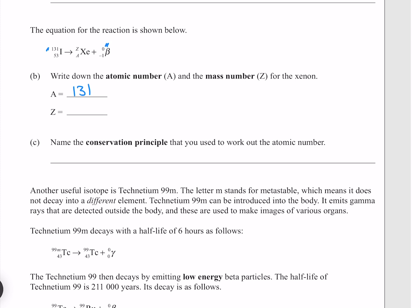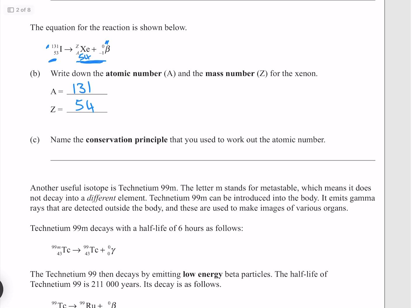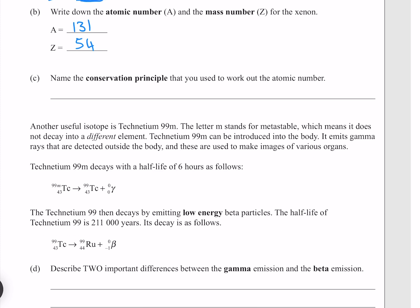As part of beta decay, because we've gained a proton however, our atomic number is going to increase by 1, giving us 54. Another way of looking at this is that our atomic number must add to the same on both sides, so if on this side we have 53, and on this side we still need 53, this must be 54 to give us 54 minus 1, which is 53. Name the conservation principle that you use to work out the atomic number. We use the conservation of atomic number, or alternatively the conservation of charge.